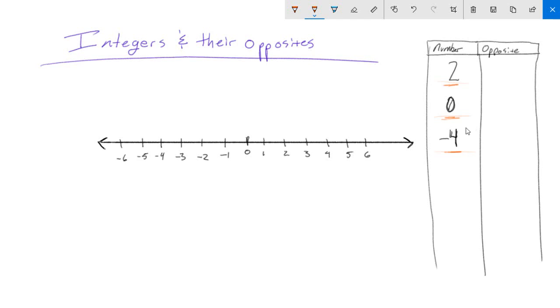So the opposite of a number is just the same distance from zero, but on the other side of zero. So what does that mean? Because that sounds a little bit more complicated than it actually is.